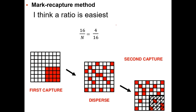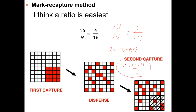Here's another mark-recapture example. You go out with mist nets and catch 12 birds of a certain species, mark them, and return a month and a half later. You assume no immigration, emigration, or deaths occurred, and that the marked birds aren't easier to recapture. You catch 17 birds this time, and only 2 are marked. So: 2 × N = 12 × 17, meaning N = (12 × 17) / 2, giving you the total population size.